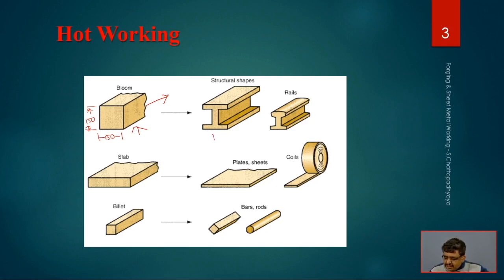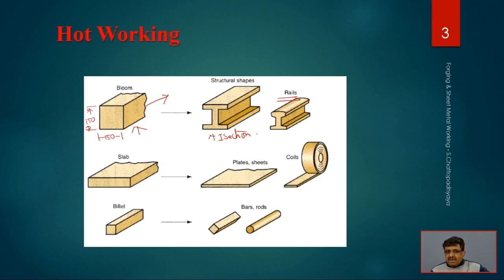From the continuous casting line, those blooms are put into rolls and other forging processes, so that structural shapes like I-sections will be associated with that. I-sections and rails will be produced on the basis of that. The blooms will be converted to either structural shapes like I-sections or rails. With hot working procedures, these structural shapes are produced.